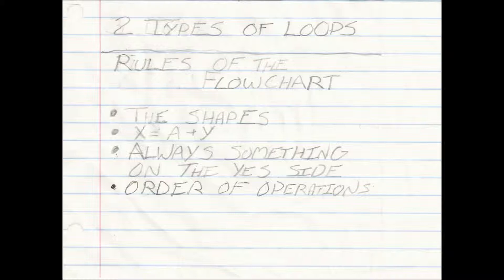Always have something on the yes side with the decision — you have to have something on the yes side no matter what. If you're putting something on the no side, something always has to be on the yes side. You can have something on the yes side without the no side, but you cannot have anything on the no side without the yes side. Order of operations: when handing the flowchart to a programmer, he needs to be able to read it. The flowchart has to be universal — everybody reads the flowchart the same way, so you have to create it correctly so your programmer can read your flowchart. Have fun, YouTube. Bye.